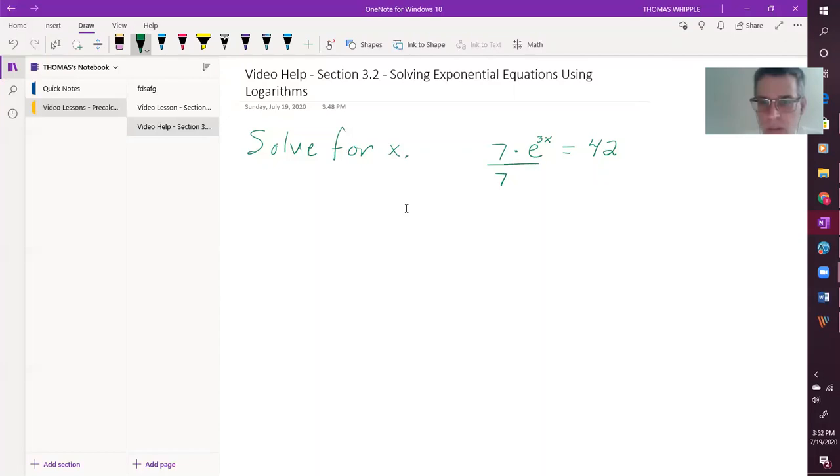Of course, we're dividing the whole side by 7. So now we have e to the 3x is equal to 6. And this is where we run into the situation where we have to use a logarithm. We're solving for the variable that's in the exponent. And whenever you're doing that, you have to use a logarithm.